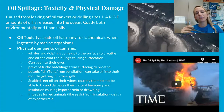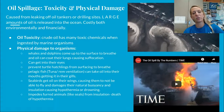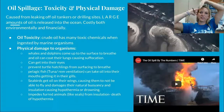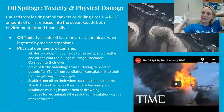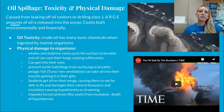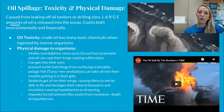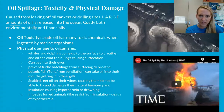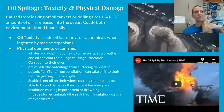Oil can prevent turtle hatchlings from surfacing to breathe. Pelagic fish that do RAM ventilation will take oil into their mouths and gills. Seabirds will get oil on their wings, preventing them from flying or staying buoyant, causing them to sink and drown. It can cause hypothermia by matting feathers down so they no longer insulate the skin effectively, making them susceptible to extreme temperature changes.